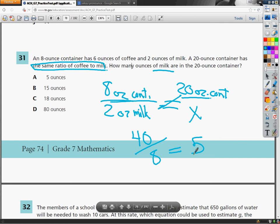It also doesn't make any sense for some of the other answers. If you have an 8 ounce container and 2 ounces of milk, and you have a 20 ounce container, how can you fit 80 ounces of milk in it? That doesn't make any sense. And if it was 18 ounces in 20, that doesn't make any sense either, because you just have a little bit of milk in 8 ounces. So 18 ounces is almost the entire container for 20. 15 ounces doesn't really make much sense either, but I guess I could sort of see where that happens. The 5 ounce thing makes a lot of sense.